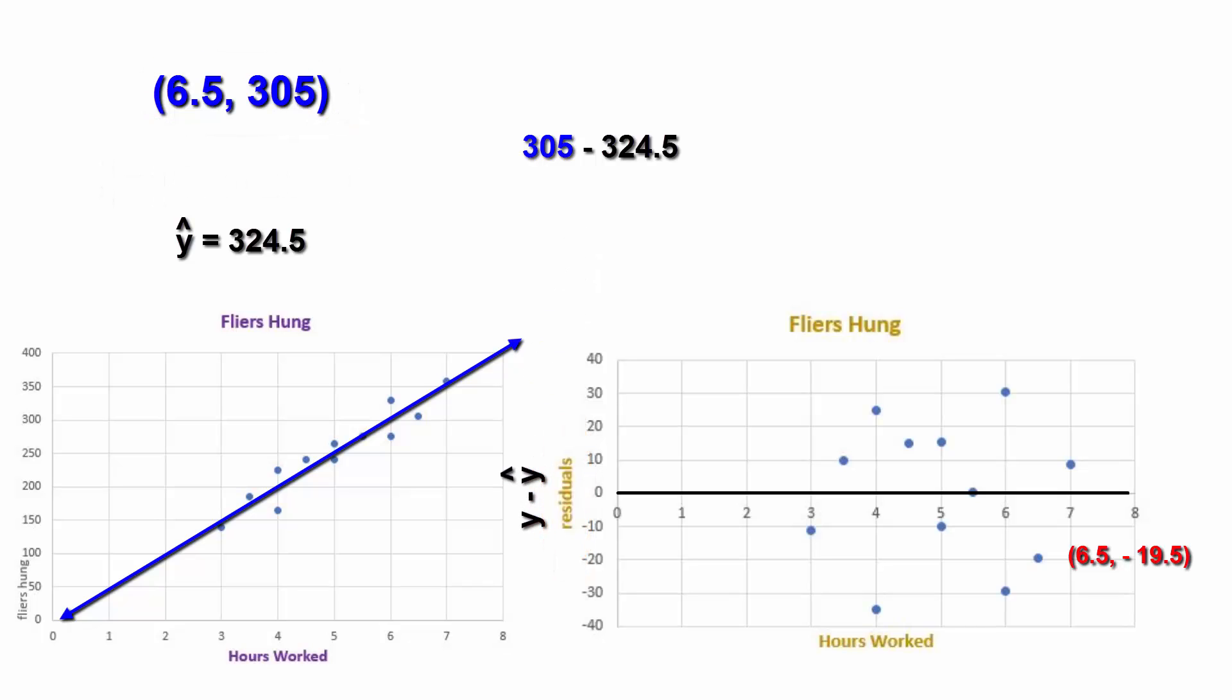It is the observed Y minus the predicted Y. These are the residuals of the points displayed in the scatter plot. Thus, the ordered pair 6.5 and negative 19.5 is the same 6.5 hours worked hooked up with the residual of negative 19.5.